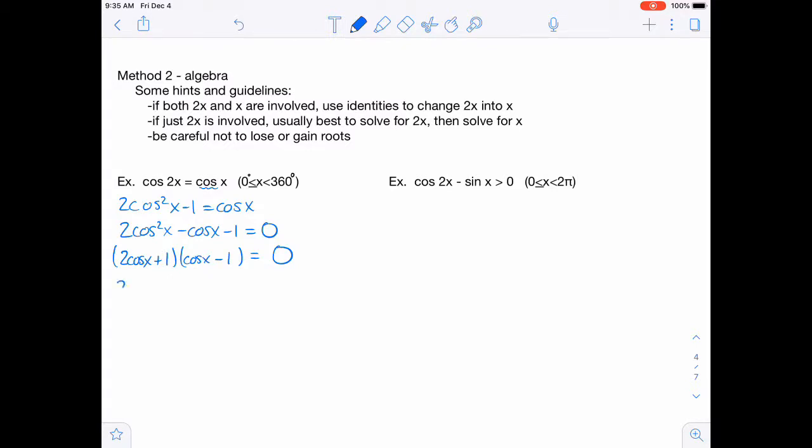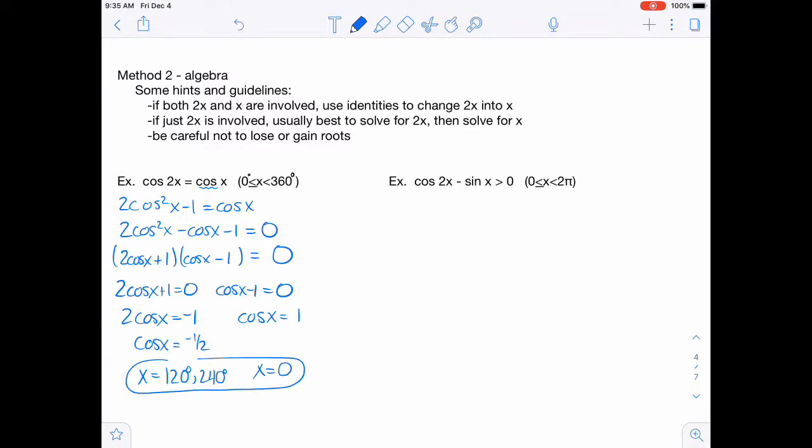And then just like before, we're going to set each one of those equal to 0. Sometimes you would skip that step and go directly to this one. And then over here, you would still need to divide by the 2. And then you can look on your chart and find those answers. So this would give you a 120 and a 240 degrees. And then the cosine of x is equal to 1 at x equals 0. And you could have plugged that into your calculator as well and done a zoom and trace to find those intersections.